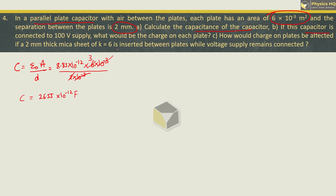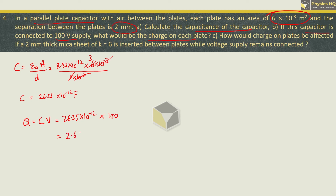If the capacitor is connected to a 100 volt supply, what will be the charge on each plate? The charge formula is Q equals C into V. So 26.55 into 10 raised to minus 12, into voltage of 100, gives 2.655 into 10 raised to minus 9 Farad — or you can also write it as nano Farad.